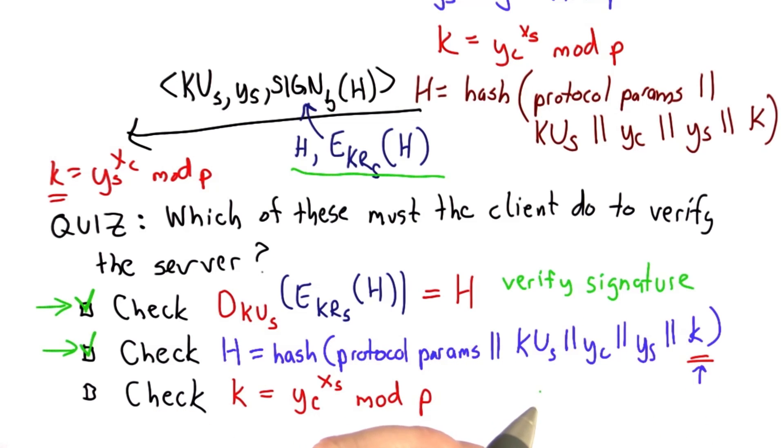We know that there's no replay attack because these values are fresh. If there was a replay attack and a different hash value was replayed, well then this hash wouldn't match.